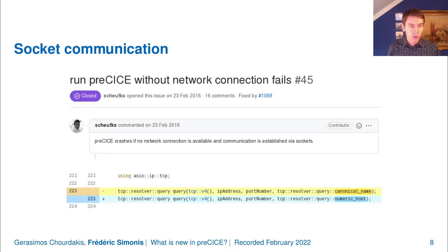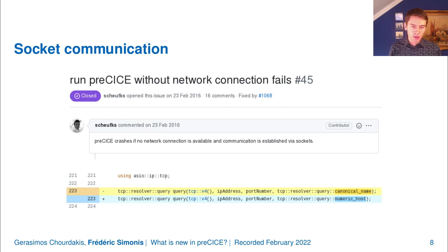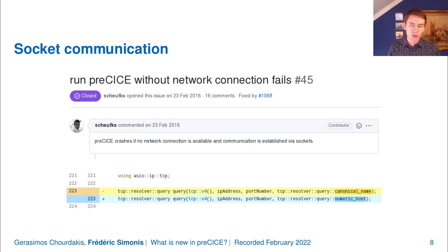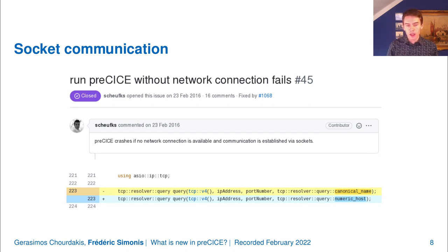We also fixed a very old bug — six years old. This bug occurs when you have an M2N connection using sockets and you don't have an internet connection. On some systems, this would cause Precise to crash. We finally figured out why: we configured Boost.Asio to do a name lookup based on the IP address from the configuration file, which triggers a DNS lookup. If no DNS server is reachable, it crashes. We managed to fix this.